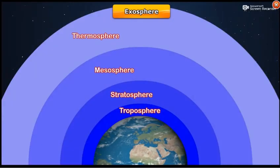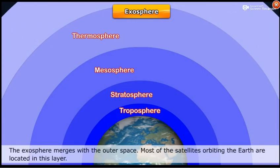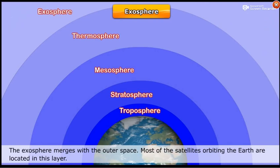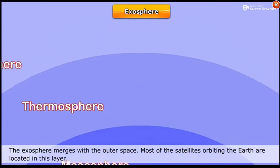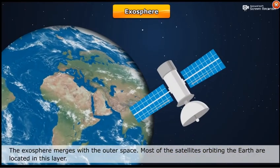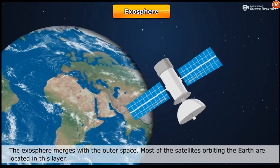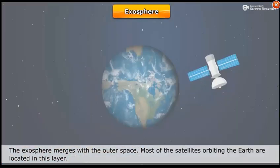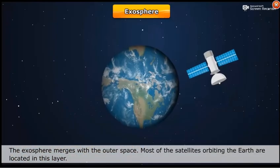Exosphere. The exosphere merges with the outer space. Most of the satellites orbiting the earth are located in this layer.